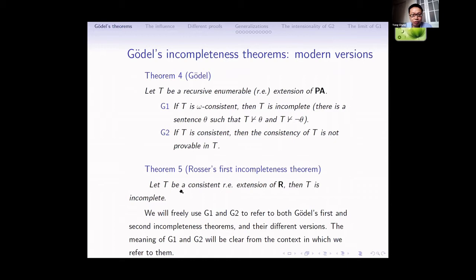Now I'll give a modern version of Gödel's incompleteness theorems. Let T be an RE extension of PA. G1 says that if T is omega-consistent, then T is incomplete. G2 says that if T is consistent, then the consistency of T is not provable in T. After Gödel, Rosser improved Gödel's theorem: Gödel's G1 assumed that T is omega-consistent, which is stronger than T being consistent. Rosser proved G1 just assuming that T is a consistent extension of R — if so, then T is incomplete.